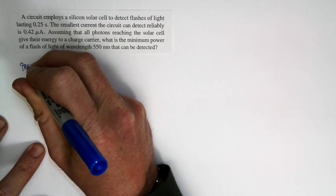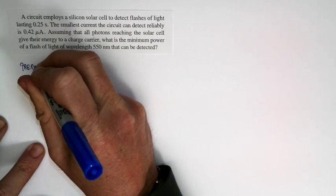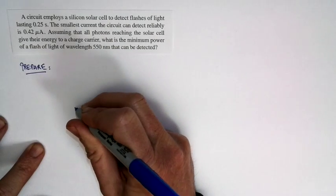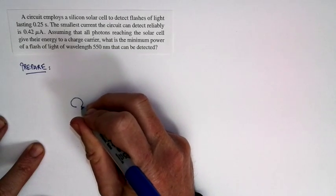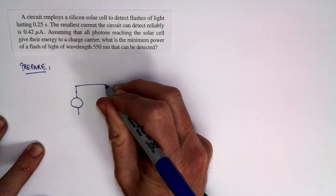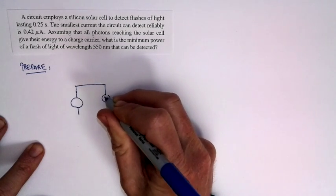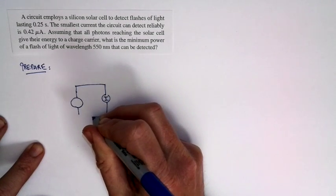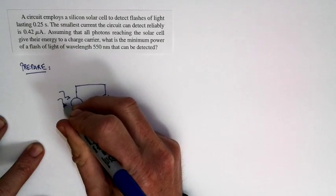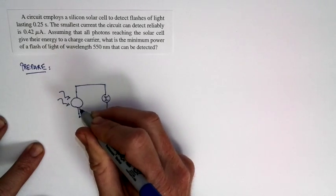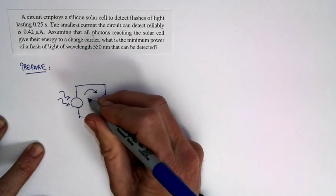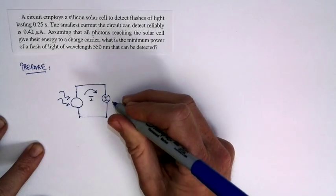Let's start with a picture of what the circuit looks like. Here's my solar cell, hooked up in a circuit. The circuit basically has an ammeter in it, and it's going to be detecting a certain current. Flashes of light come in, they hit the solar cell, that causes a current to flow in the circuit, and we measure the current.